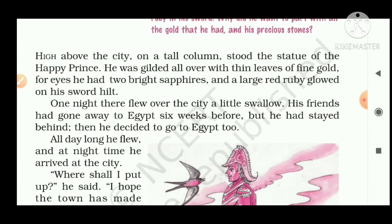High on a tall column stood a statue of the Happy Prince. He was gilded all over with thin leaves of fine gold. For eyes he had two bright sapphires, and a large red ruby glowed on his sword hilt. His statue was established on a high pedestal in the middle of a town, his whole body gilded with thin gold plates, his eyes made of bright sapphires, and a red ruby placed on the hilt of his sword.